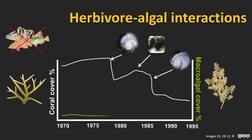The reason for that decline is because the fleshy algae — the seaweeds — had increased, because they were no longer being controlled by herbivores: there weren't enough fish, and the urchins had been removed by disease. This led to a fundamental change in the appearance of those reefs in Jamaica. They went from beautiful coral gardens to something that was really rather flat and dominated by big, fleshy seaweed.